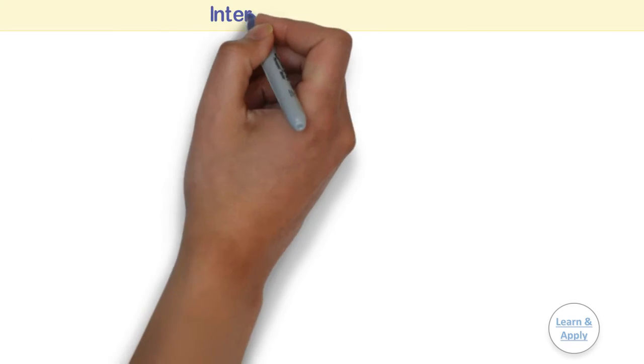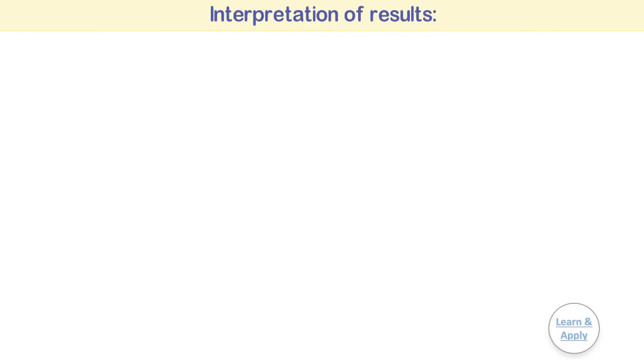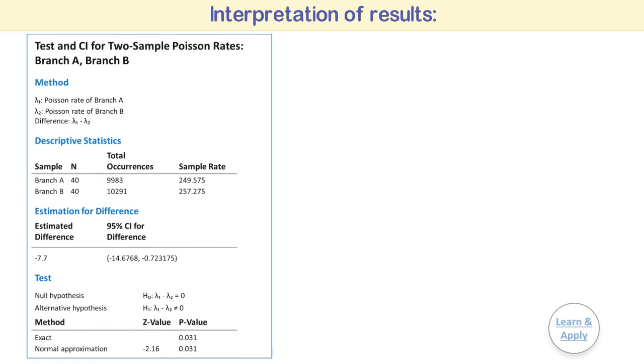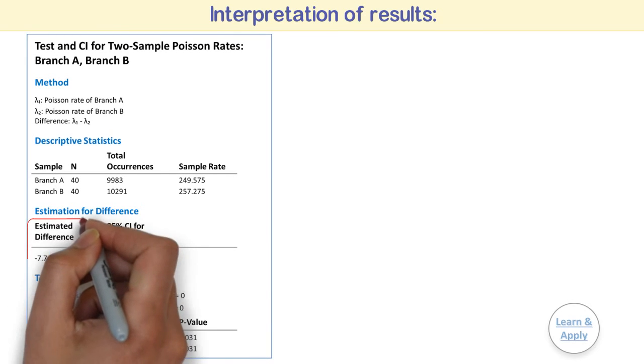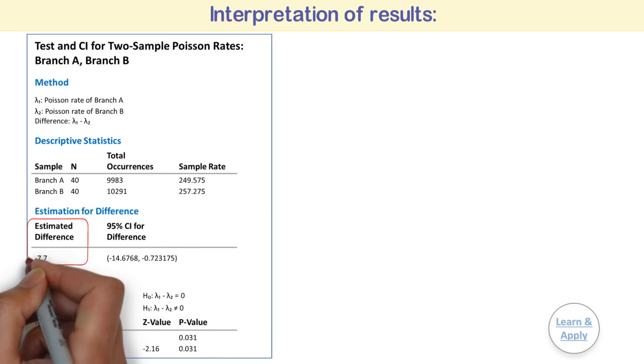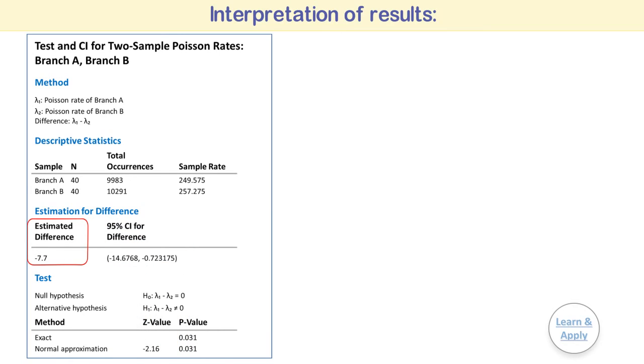Interpretation of results. In these results, the estimate of the population rate of occurrence for the difference in customer visits for two post offices is -7.7. You can be 95% confident that the difference in the population rate is between approximately -14.7 and -0.7.